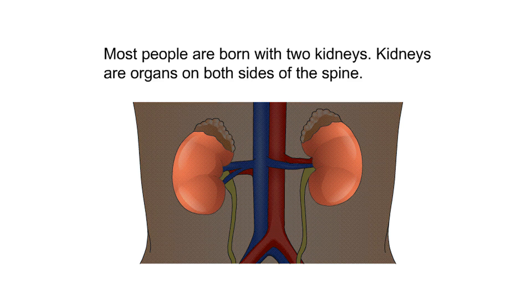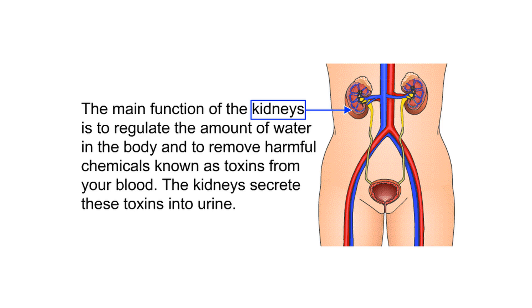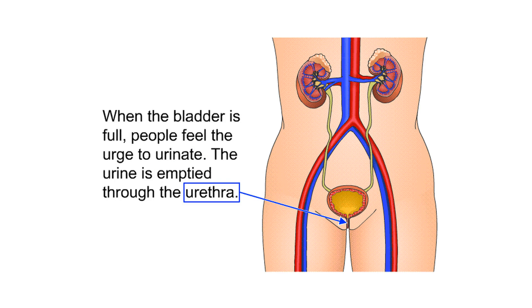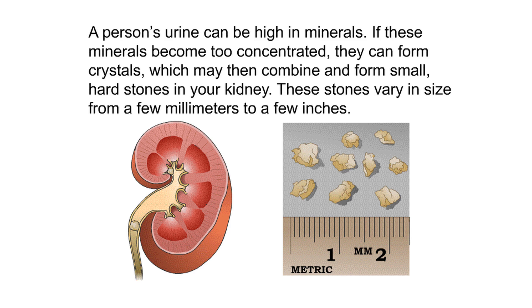Anatomy. Most people are born with two kidneys — organs on both sides of the spine. The main function of the kidneys is to regulate the amount of water in the body and to remove harmful chemicals known as toxins from your blood. The kidneys secrete these toxins into urine. Urine flows through tubes called ureters to the bladder, where it is stored. When the bladder is full, people feel the urge to urinate.